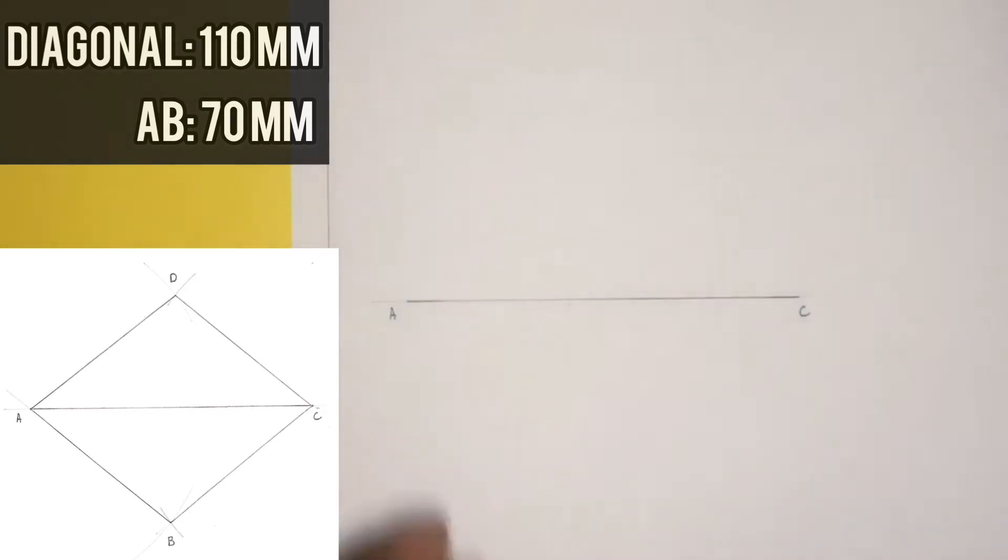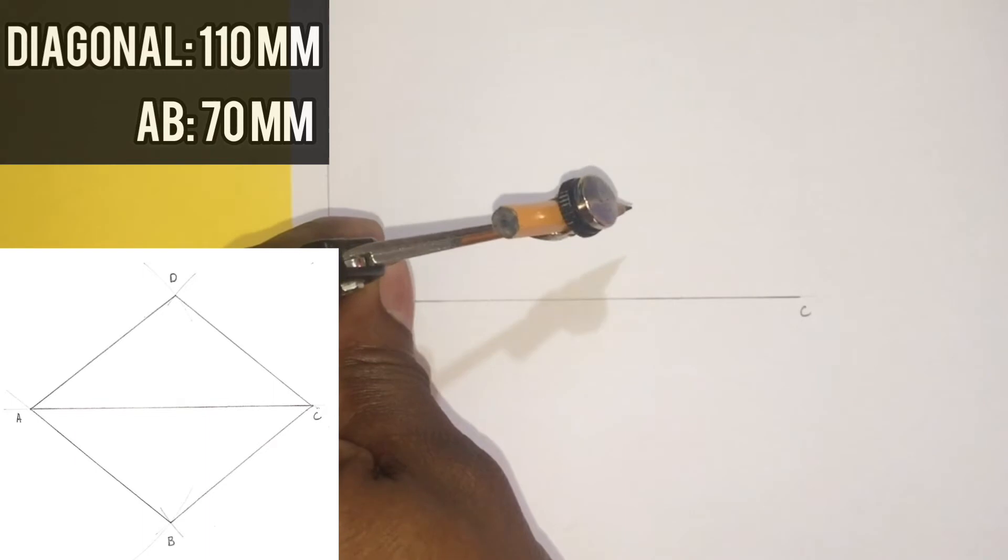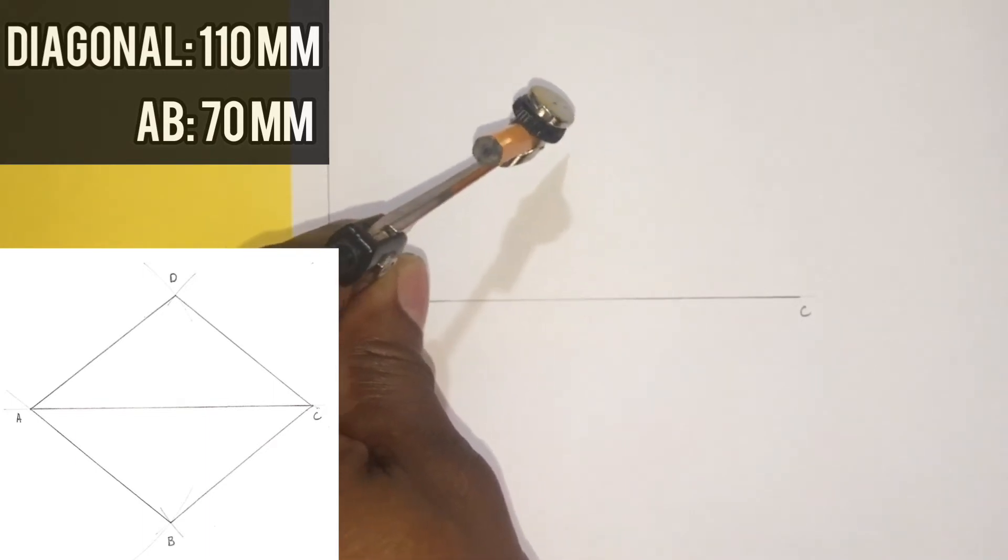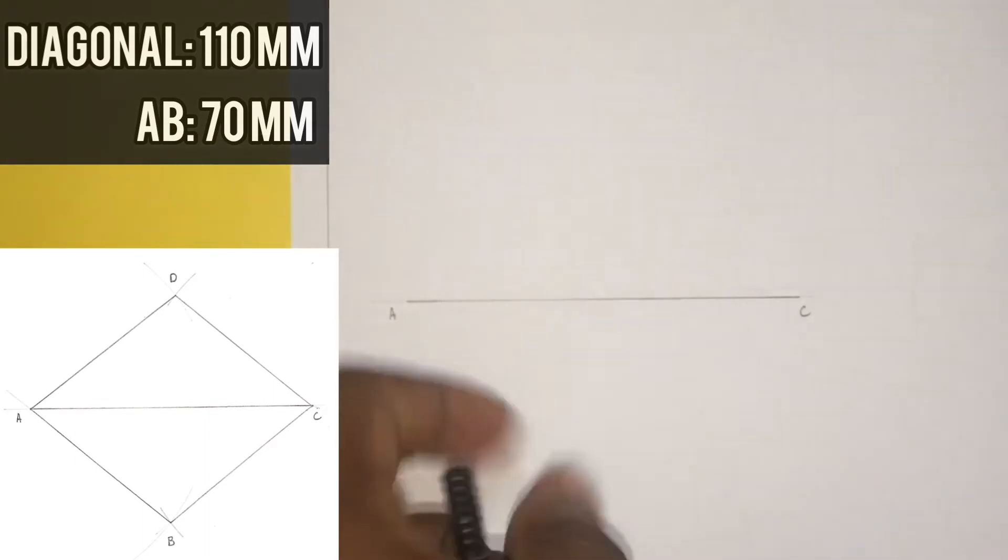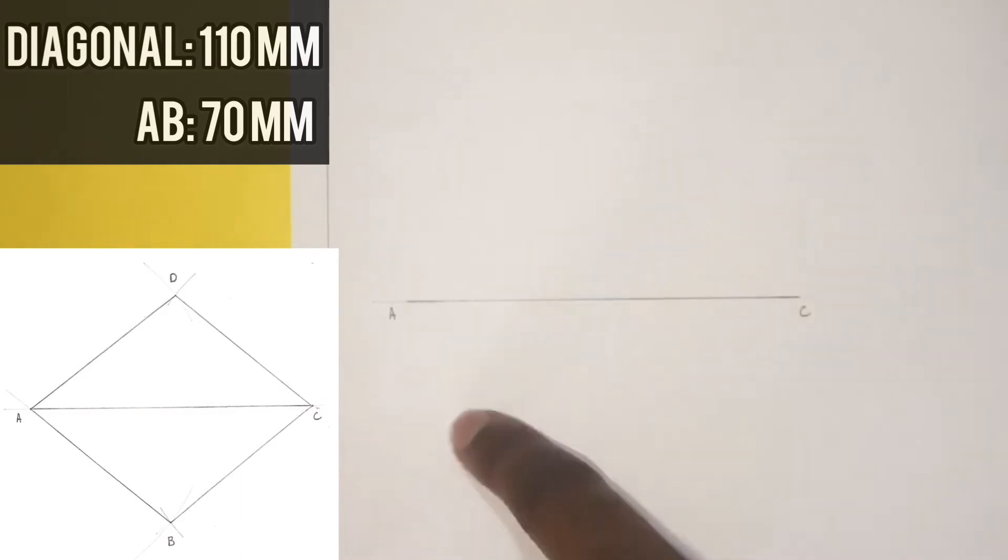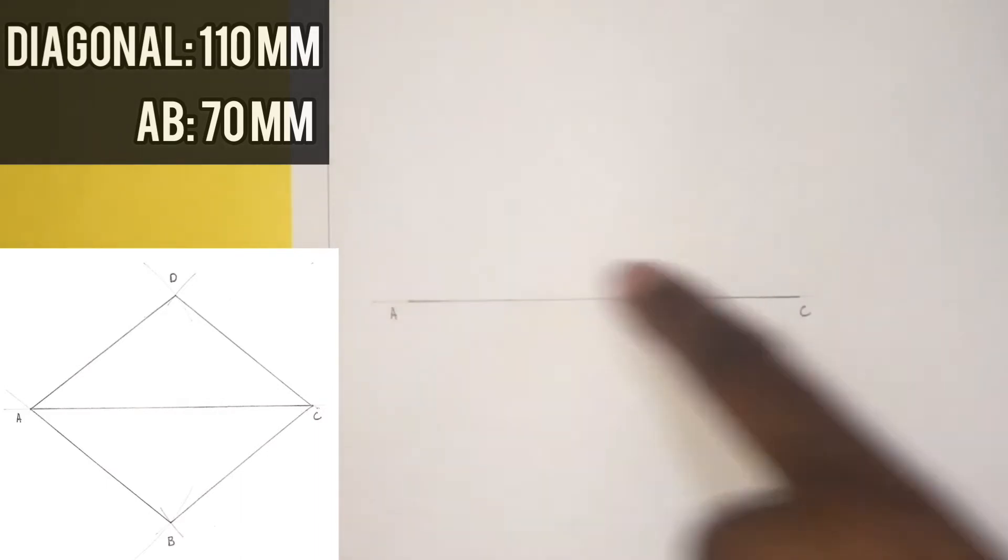When the compass is placed at A and C, we will scribe intersecting arcs above the diagonal AC and below the diagonal AC from points A and C.